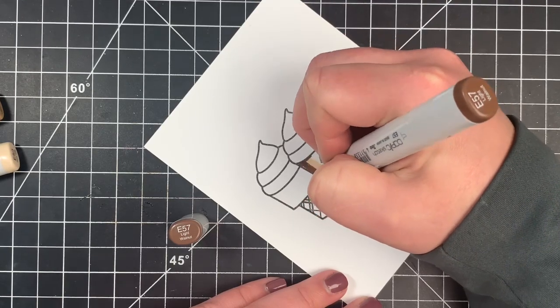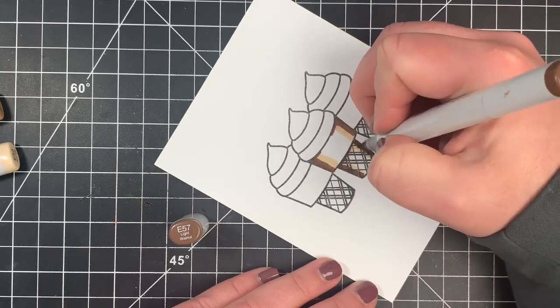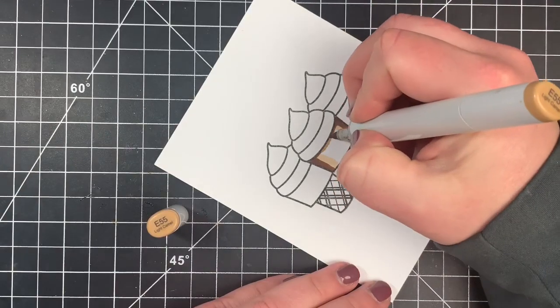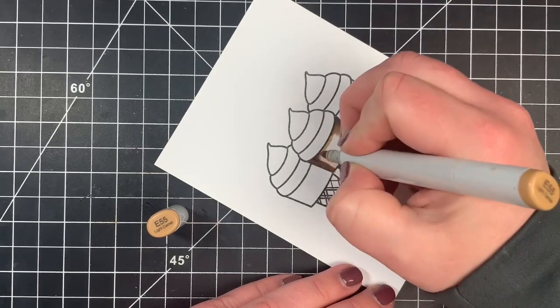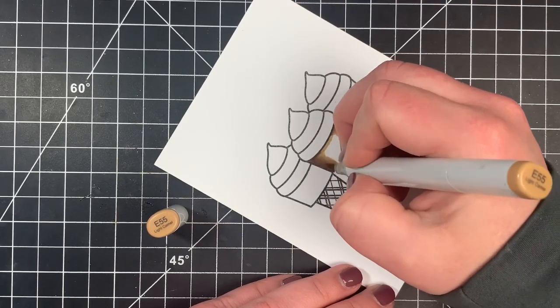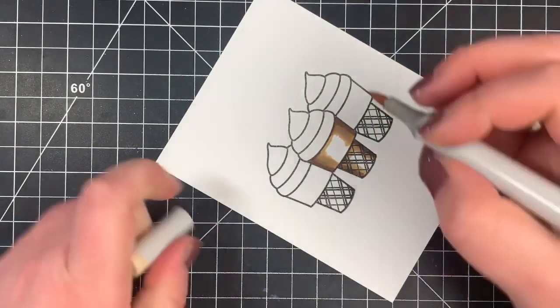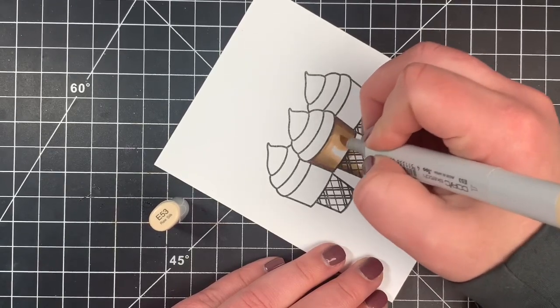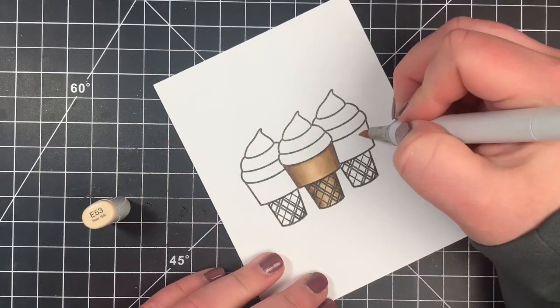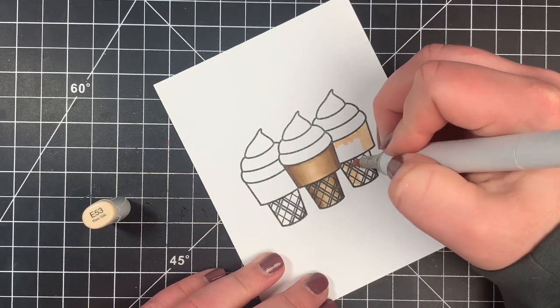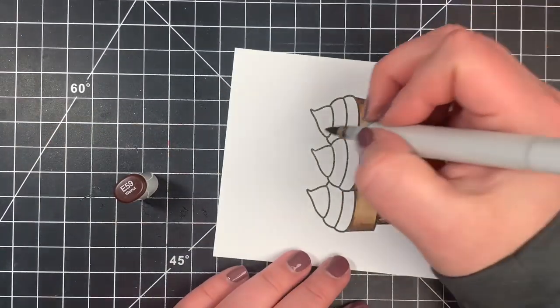I'm also adding a shadow underneath where the ice cream would be hanging over the cone and where that top section of the cone is hanging over the bottom section, the part that you hold. Then I can blend that out with the E55 and extend out my shadows, then finish off with that E53 for the highlight color. I colored the other two cones the same way, and for the ice cream itself, I wanted chocolate, strawberry, and vanilla.